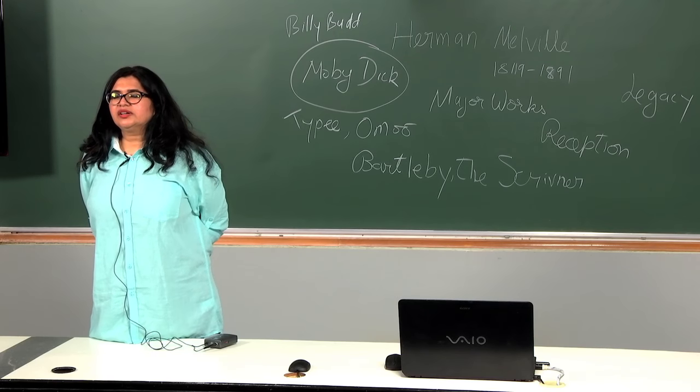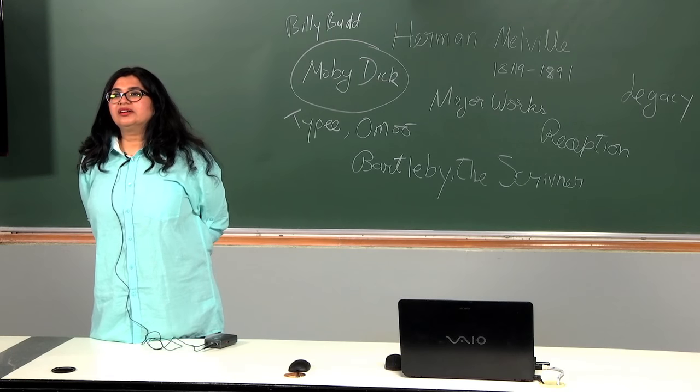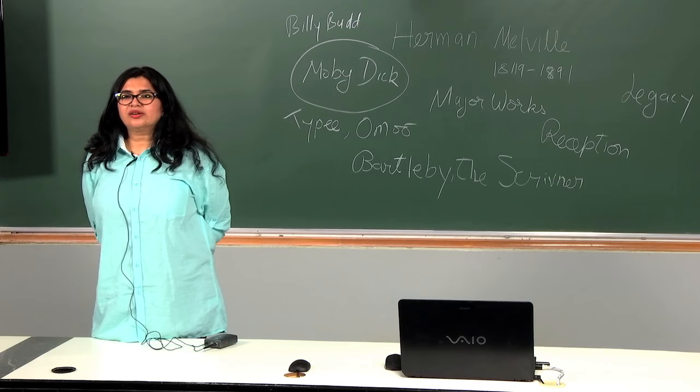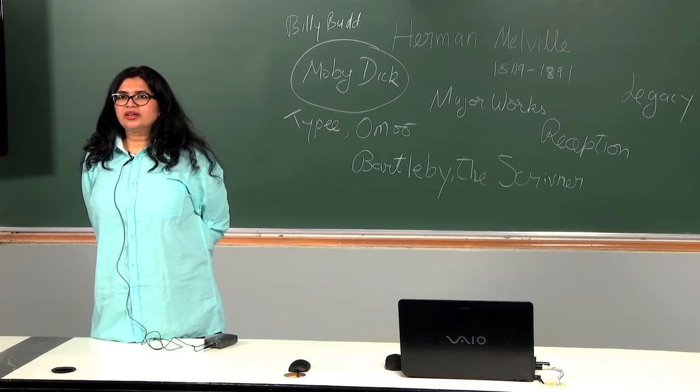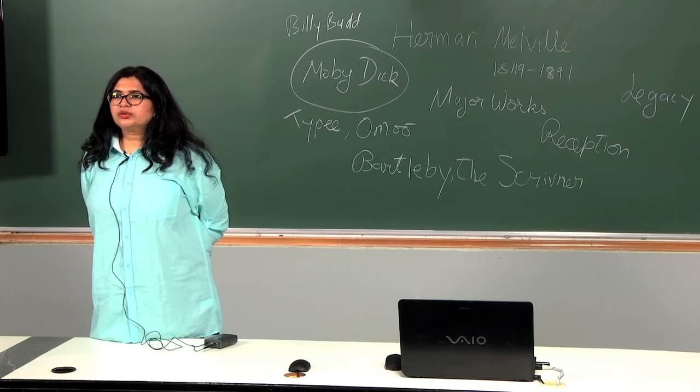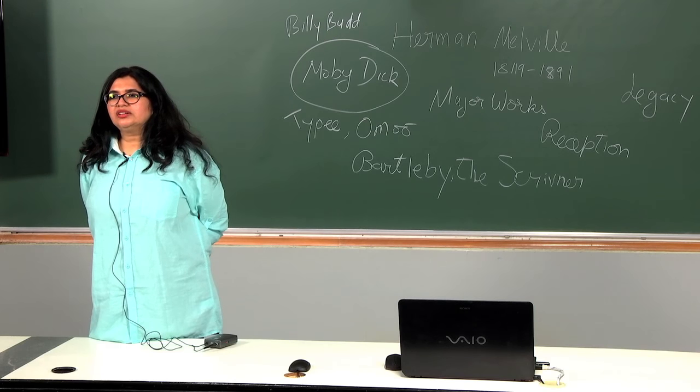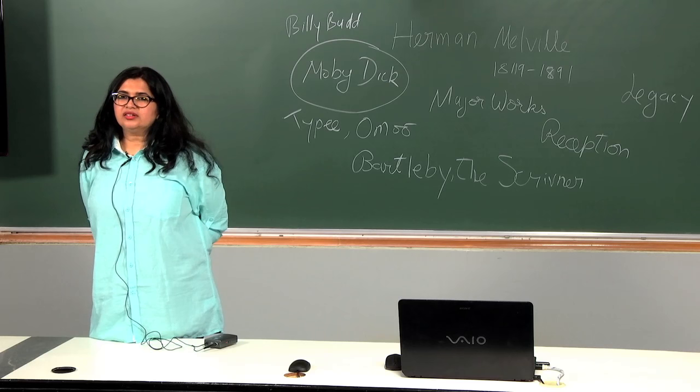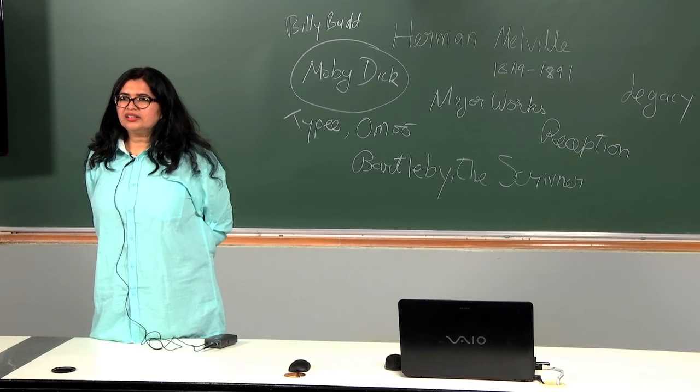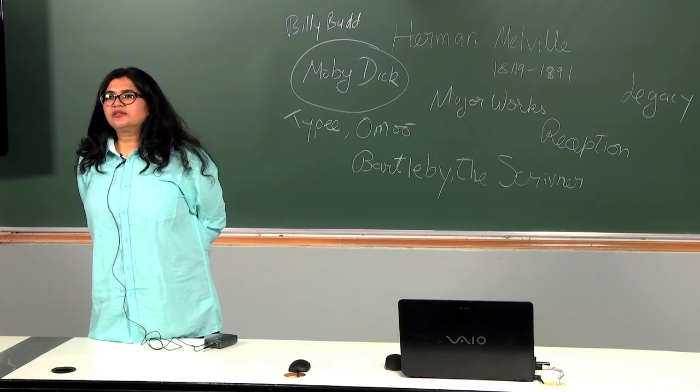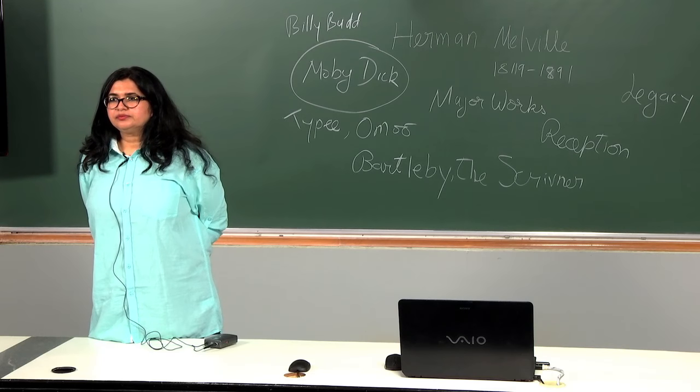In 1841 he sailed on the whaler Acushnet, so these are all the names of his ships, Acushnet, to the South Seas. In June 1842 the Acushnet, A-C-U-S-H-N-E-T, it anchored in French Polynesia.